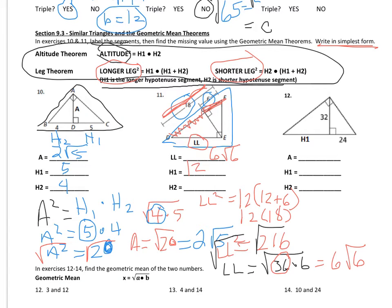You do number 12. It's a little different — they're asking you to find a piece of the hypotenuse, specifically the longer piece, so you'll be solving for it. I'll grade it and see how you do.